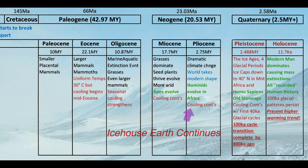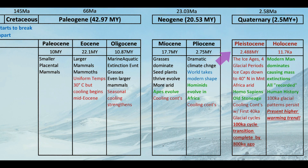The icehouse Earth continues. The Quaternary period began 2.58 million years ago and has lasted 2.5 million years so far — it is our current period. The first epoch of the Quaternary was the Pleistocene, lasting about 2.488 million years. This was the ice ages: there were four glacial periods where ice caps came down to 40 degrees north latitude — the same latitude as Reno, Nevada; Boulder, Colorado; and Beijing, China. Homo sapiens were evolving. This is also the time we call the Old Stone Age.